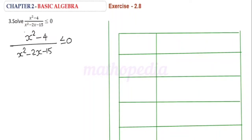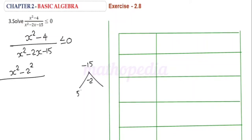Now let us factorize this into factors. The numerator can be written as x² - 2². For the denominator, we have a quadratic polynomial. When we multiply we get -15, and when we add we get -2. So, 5 × 3 = 15 and -5 + 3 = -2. This can be written as (x - 2)(x + 2) divided by (x - 5)(x + 3) ≤ 0.